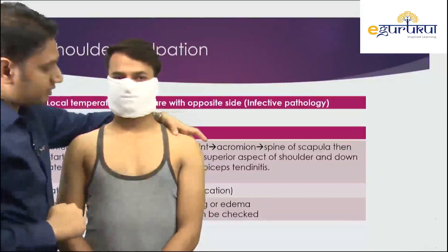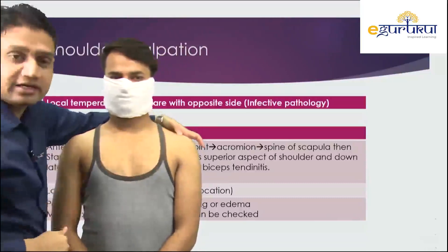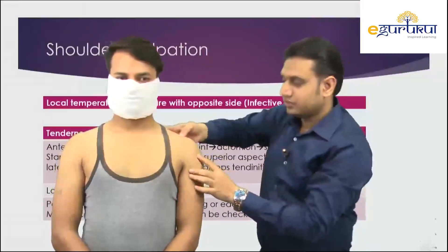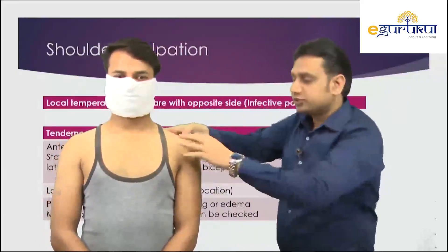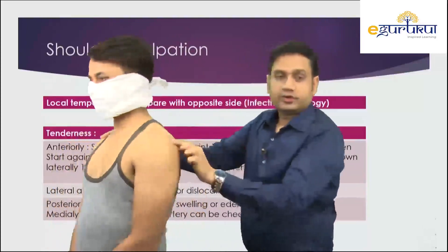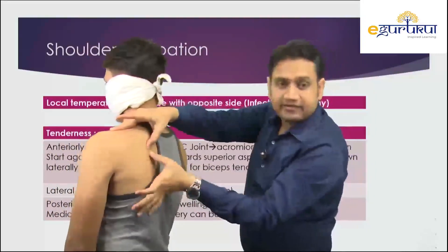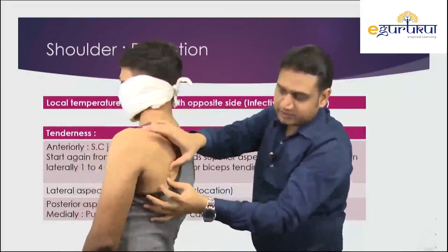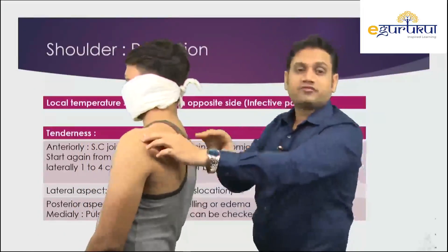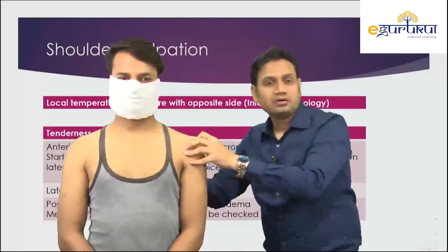Starting from the sternoclavicular joint, we trace the full length of the clavicle to its lateral end, which articulates with the acromion. From there, trace down to the acromion area, then follow the acromion around to the back, tracing the margin of the scapula. So we have checked the entire scapula — from the sternoclavicular joint, along the clavicle, the acromioclavicular joint, the acromion, the spine of the scapula, and to the scapular margin.